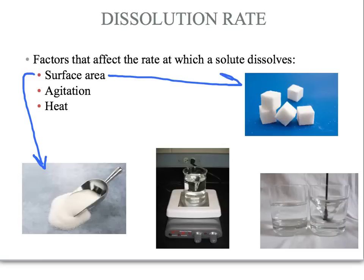let's compare these two forms of sugar. In both cases, the chemical composition of the sugar is identical. The only difference is the size of the particles themselves. With pretty much every solute, the higher the surface area, the quicker the material will dissolve. So here, with the very small crystals of sugar, we have a super high surface area.